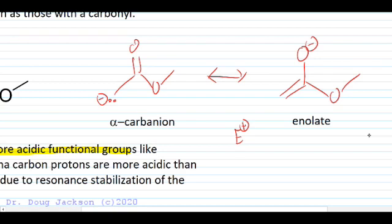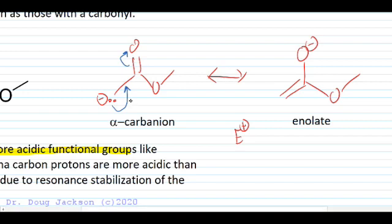The resonance hybrid is going to resemble the enolate form more. If you want to show the interchange of the alpha carbanion to the enolate, you do it as such — but remember, those electrons aren't actually moving; they're already in a hybrid state. We just can't draw both states at once without using the hybrid structure, so typically you'll see one or the other drawn.